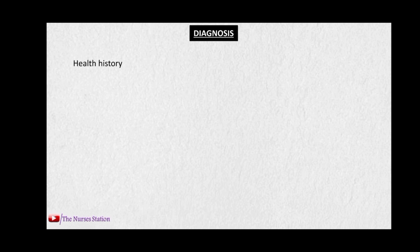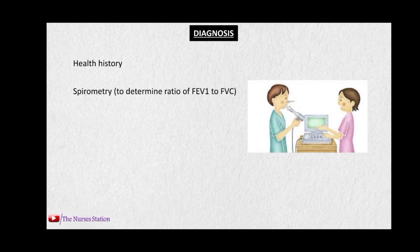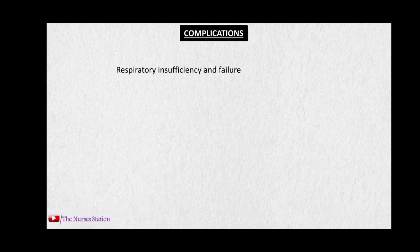To diagnose COPD, we first take a history from the patient including signs and symptoms, risk factors, family history, and alleviating and exacerbating factors. Next, spirometry is used to determine the ratio of FEV1 to FVC. Arterial blood gas analysis determines the level of oxygen in the blood, and screening for alpha-1 antitrypsin deficiency is also performed. Complications of COPD include respiratory insufficiency and failure, pneumonia, chronic atelectasis, pneumothorax, and pulmonary artery hypertension.